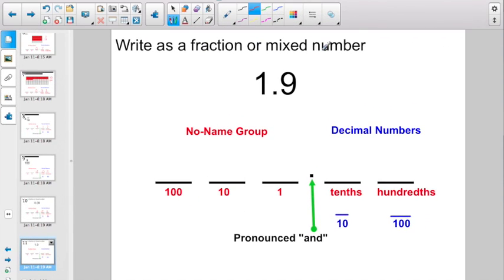Write this guy as a fraction or a mixed number. How do you say this? One and nine tenths, right? That's how to pronounce it. So how are you going to write it as a mixed number? One and nine tenths. Nine is my numerator. Ten is my denominator. One and nine tenths.